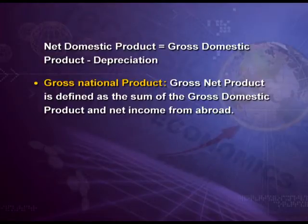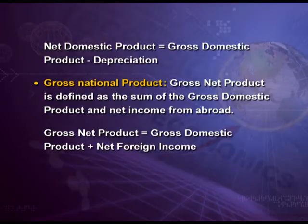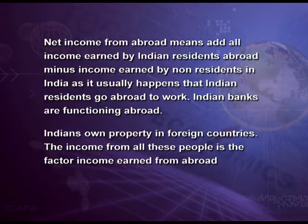What is Gross National Product? Gross National Product is defined as the sum of the Gross Domestic Product and net income from abroad. GNP equals GDP plus net income from abroad. Net income from abroad means: add all income earned by Indian residents abroad, minus income earned by non-residents in India. This includes Indian residents working abroad, Indian banks functioning abroad, and Indians who own property in foreign countries — all of these constitute factor income earned from abroad.